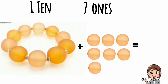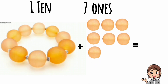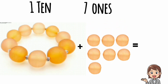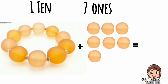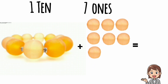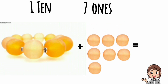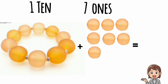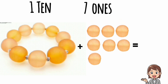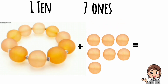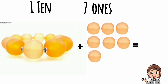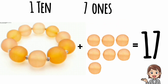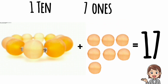Here I have one bracelet and seven beads. One bracelet means one ten and seven beads means seven ones. So one ten and seven ones make seventeen. Seventeen.